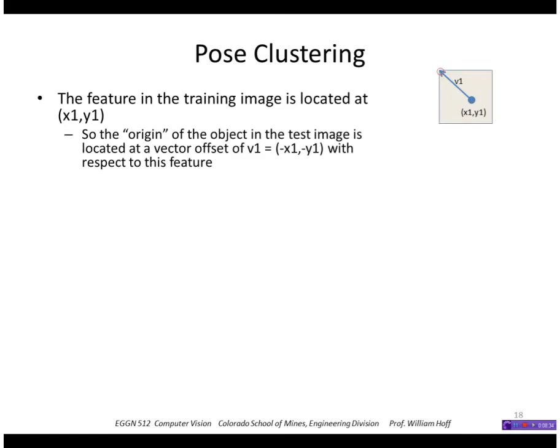We calculate these scales and rotation changes. Let's say we have a test image and we found a feature at x1, y1. Let's define the origin of the object in that test image as, say, the upper left corner. That means if I find a feature in the test image, the origin is at vector v1 with respect to the feature location, where v1 is just this.